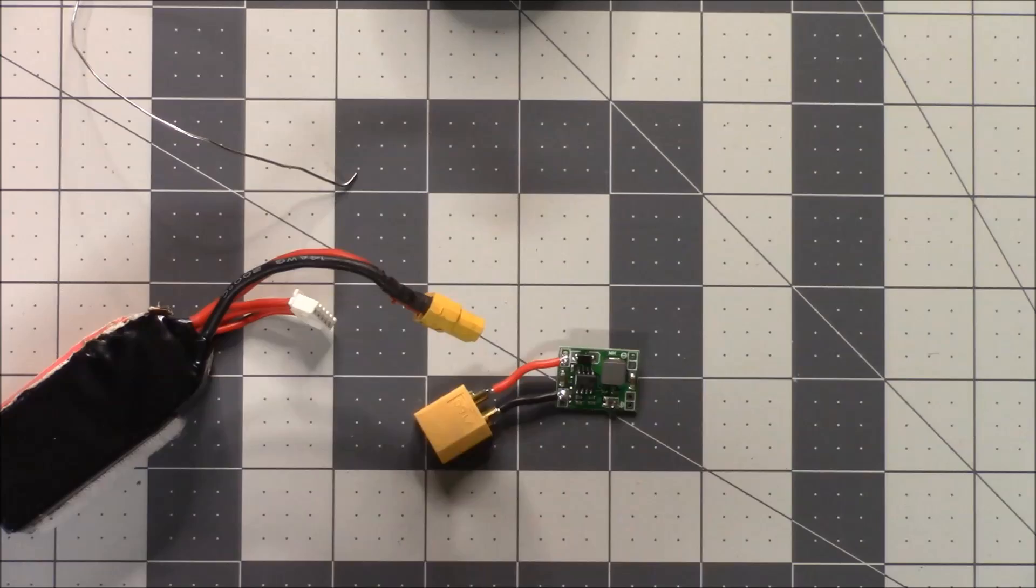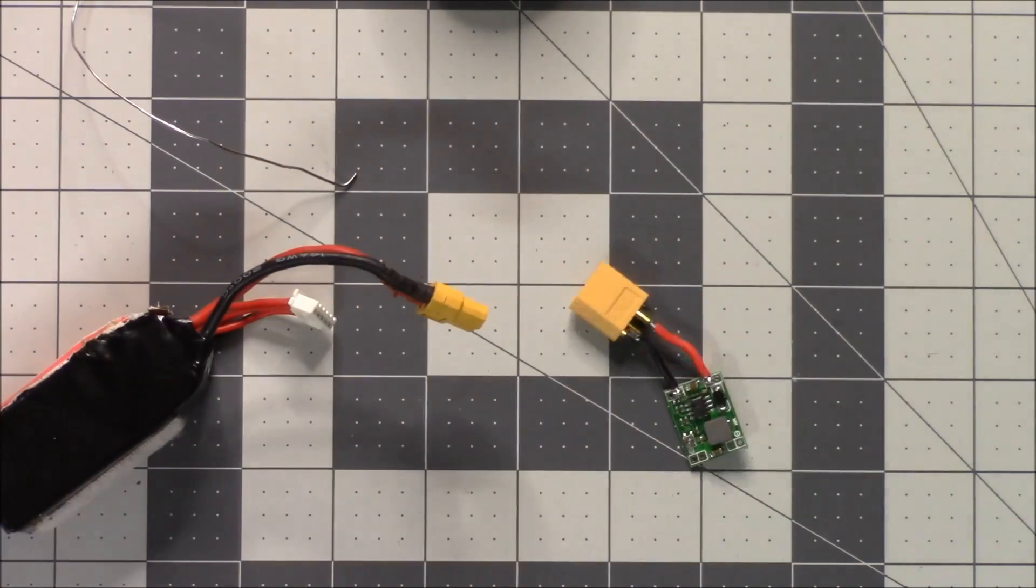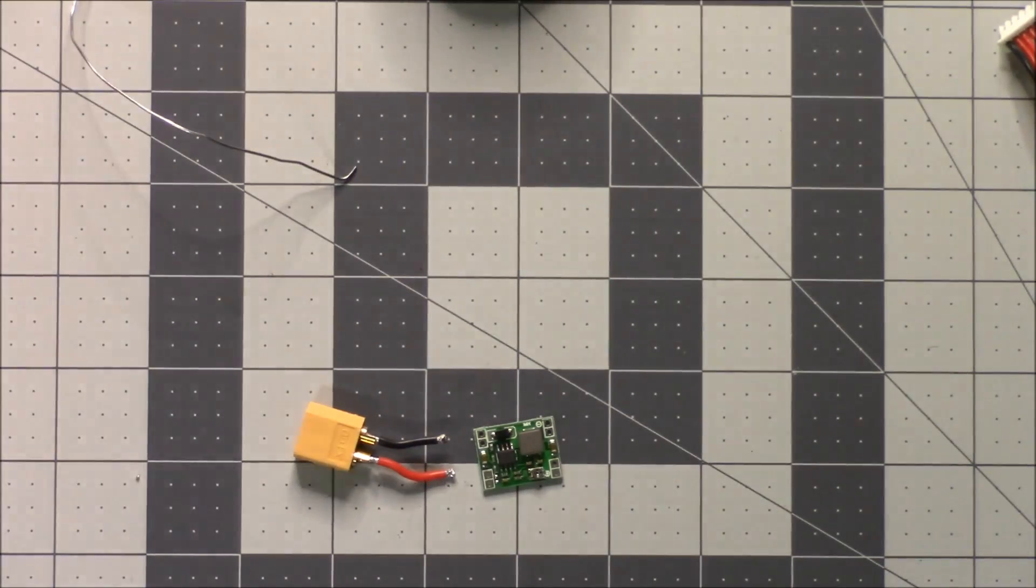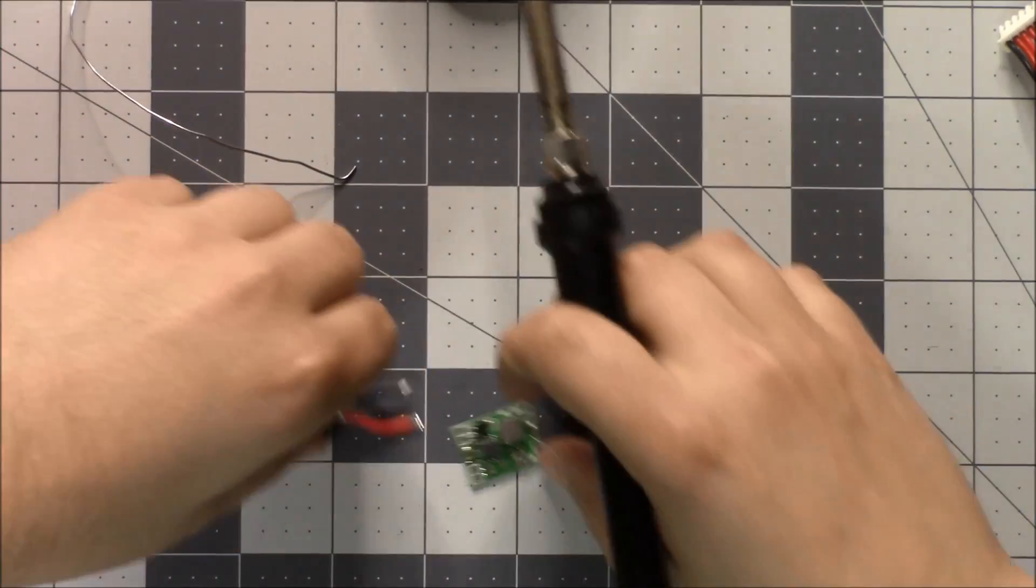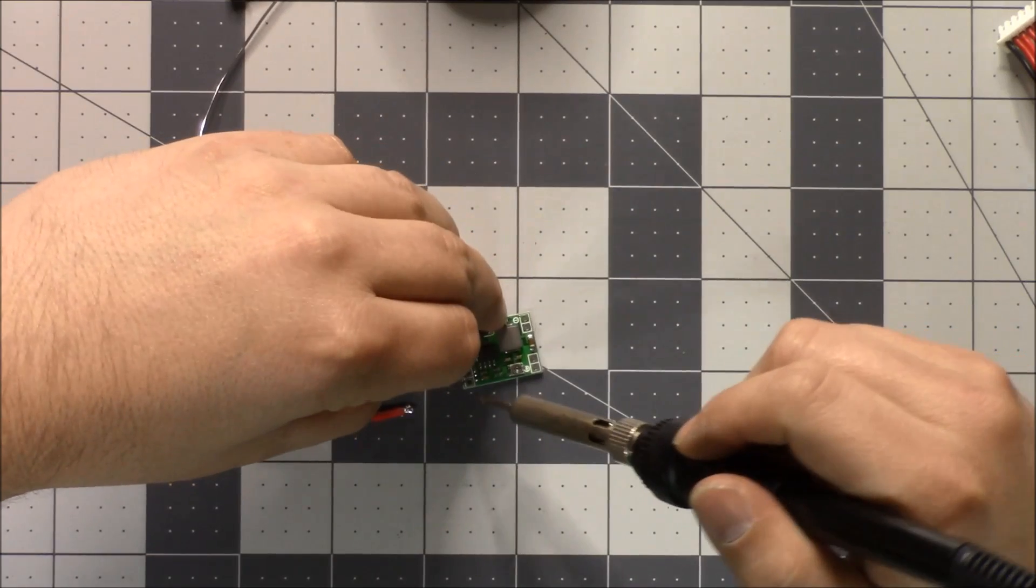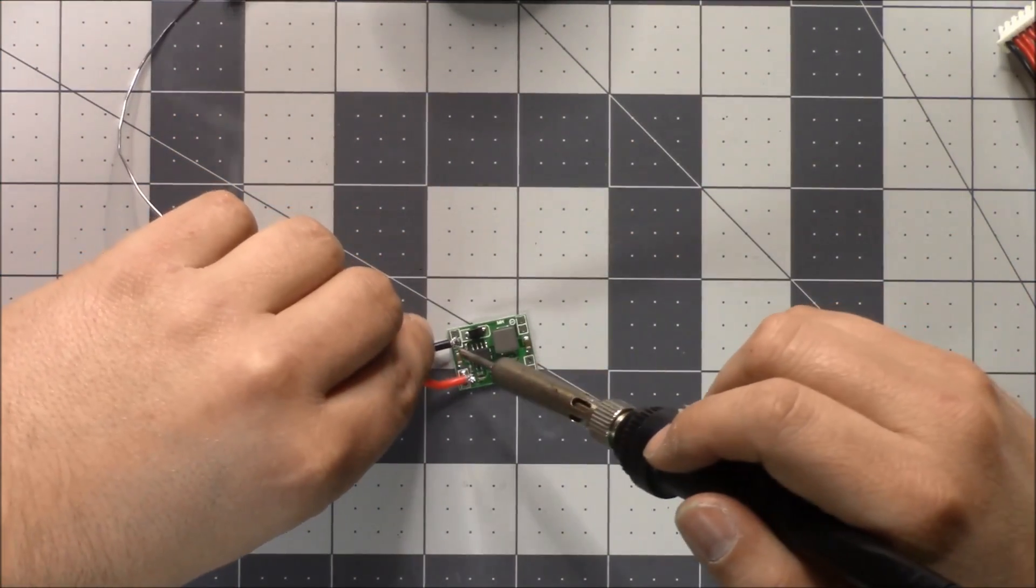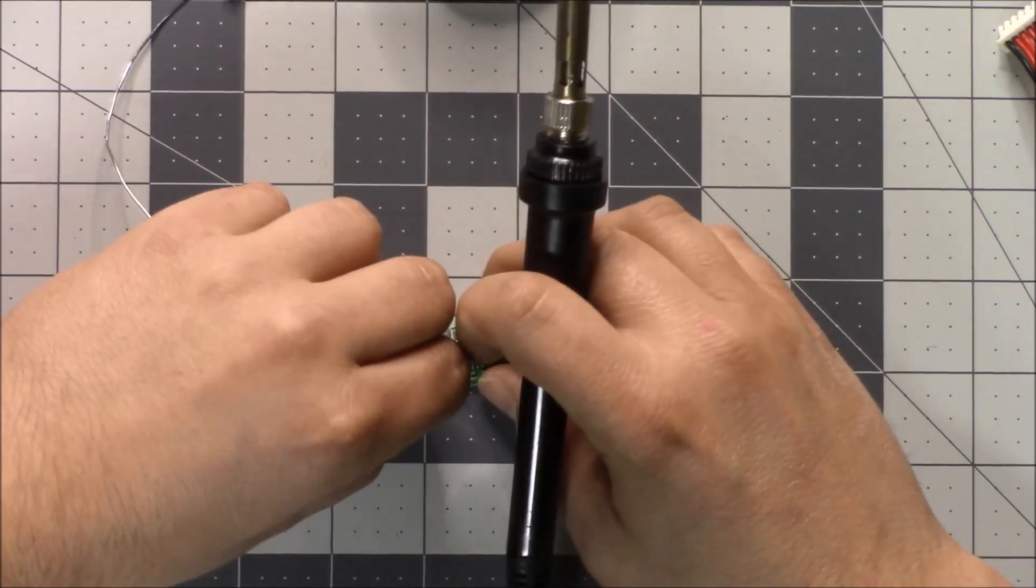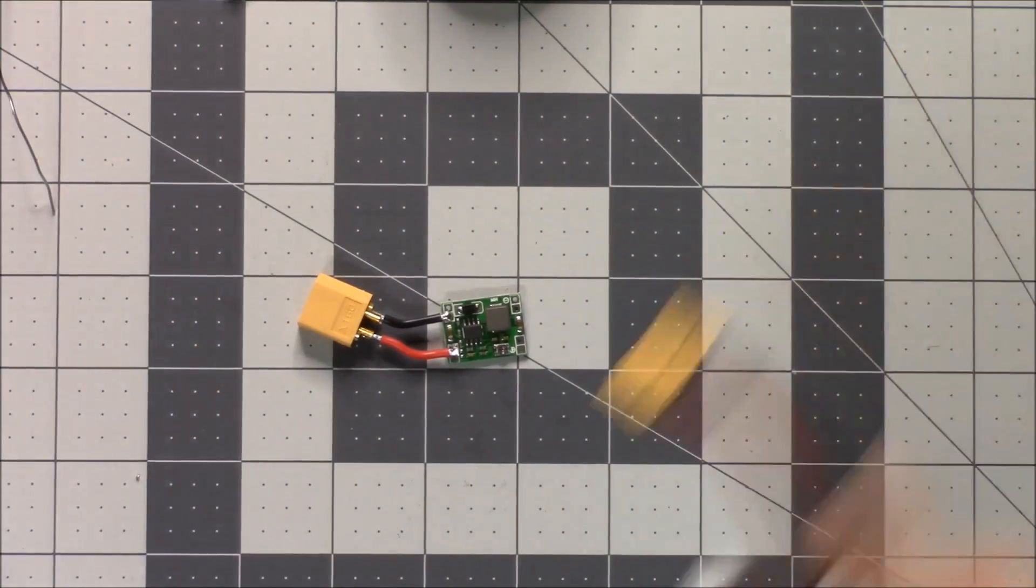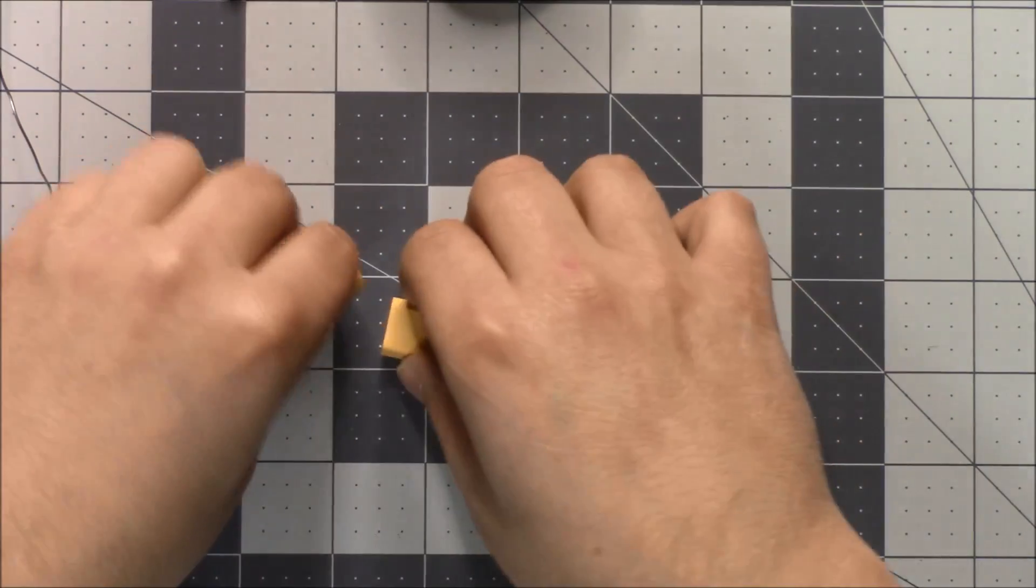That's what happens when you wire it backwards, boy do I get to start over again. What an idiot. Okay well I'd like to say that I did that on purpose but even I make mistakes. I thought maybe this input diode would have protected from reverse voltage but no, it's not. So if you wire it up backwards you're going to let the smoke out just like I did.